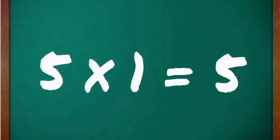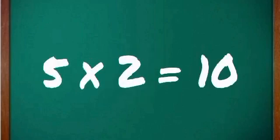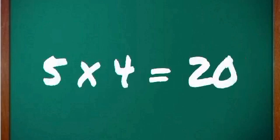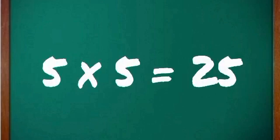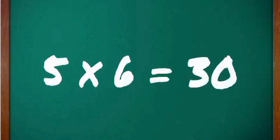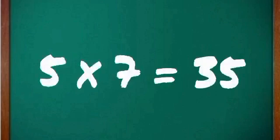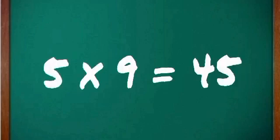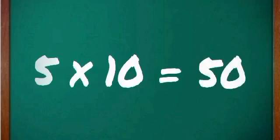5 one's are 5, 5 two's are 10, 5 three's are 15, 5 four's are 20, 5 five's are 25, 5 six's are 30, 5 seven's are 35, 5 eight's are 40, 5 nine's are 45, 5 ten's are 50. See ya!